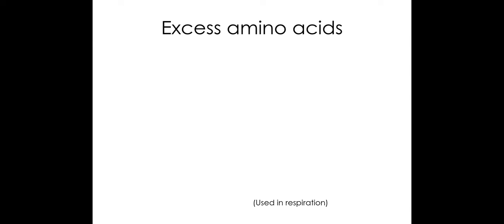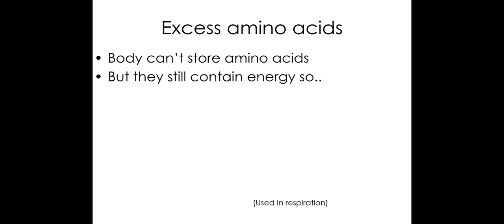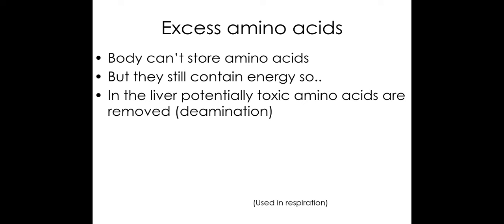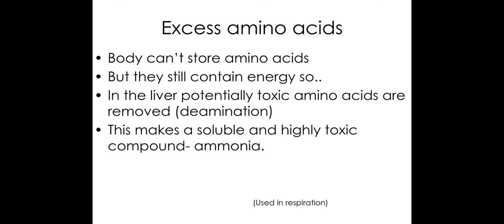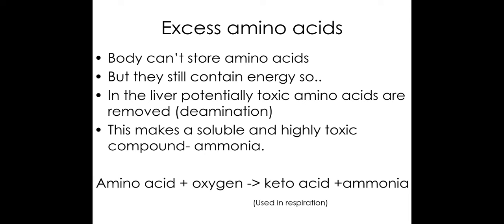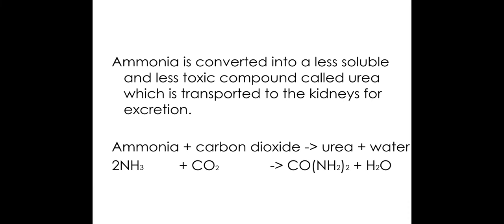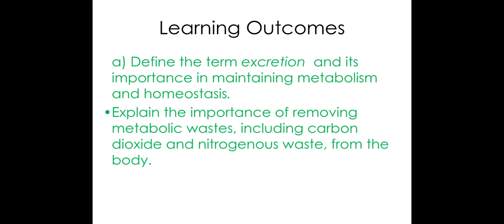The next thing we need to get rid of is excess amino acids. We can't store amino acids, but they still contain a lot of energy. So what the liver does is remove part of them by deamination, which creates ammonia. Ammonia can't be stored and needs to be removed, so it is converted into a more soluble and less toxic compound called urea, which can then be excreted from the body through urination. That is what excretion is and those are the different ways in which we remove those products and why we need to do it.